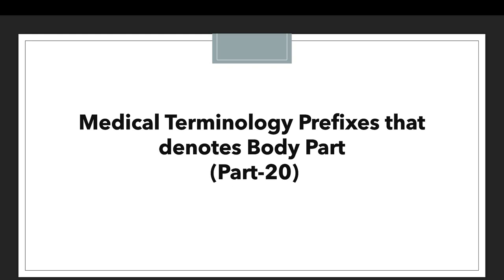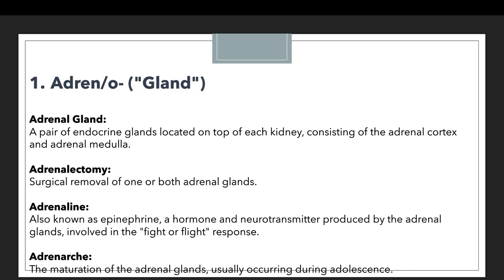Let's focus on the first prefix, which is adren or adreno. This prefix is mainly used to denote gland — whenever we are talking about something related to a gland, we use the term adren or adreno. For those following this series, you may wonder why we use adreno for gland when we already discussed aden or adeno in our last session. As I mentioned, there are alternative prefixes available for various things — for gland you can use either aden/adeno or adren/adreno. We should know all the alternative names because in exams or interviews, anything could come up.